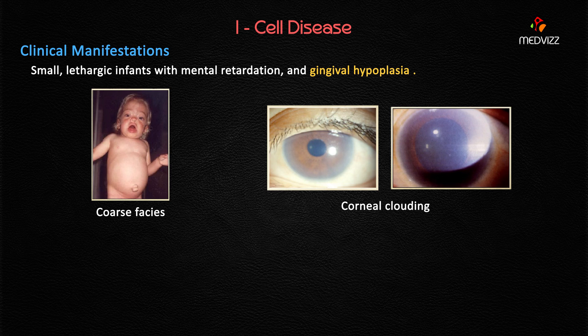You cannot diagnose I-cell disease from small, lethargic infants with mental retardation alone. The marker findings are corneal clouding, coarse facies, and gingival hypoplasia. Gingival hypoplasia — deterioration of the gums — is the key marker. Without coarse facial features and gingival hypoplasia, a case of I-cell disease cannot be formed. These two findings together allow a blind diagnosis.